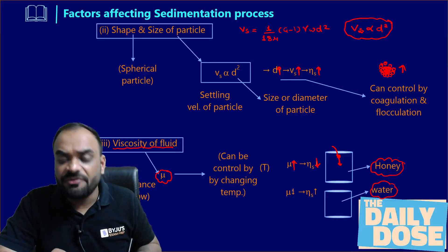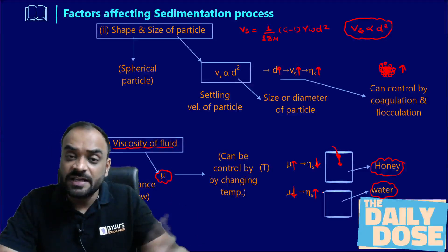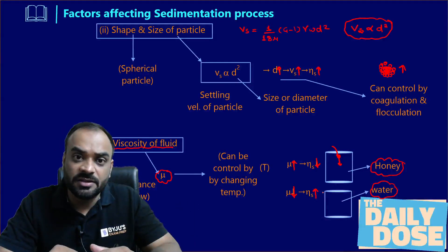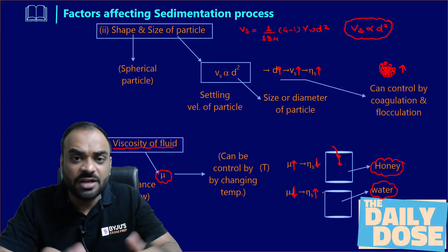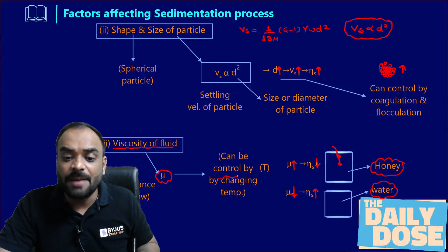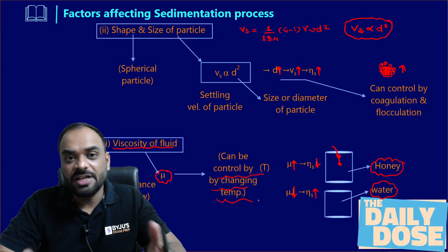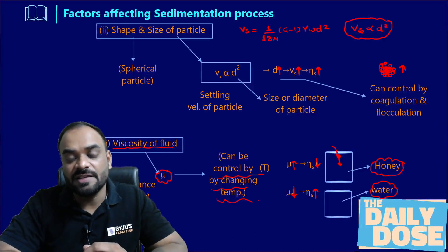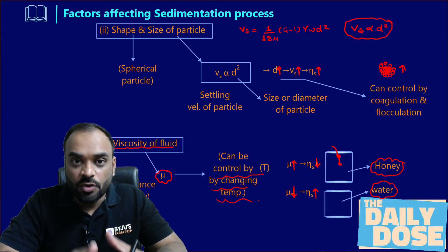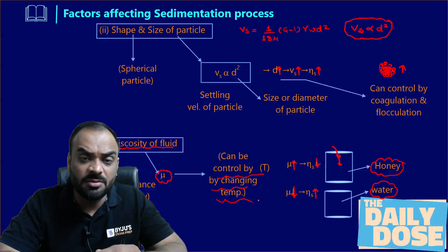In water, the dynamic viscosity is lesser, so the settling velocity will be higher compared to honey, and the sedimentation efficiency will also be high. Viscosity can also affect the sedimentation process. Now, can we control this factor? Yes — you can control dynamic viscosity by changing the temperature. However, the problem is that we are treating water in very large quantities to supply to the urban area, and it is not possible to change the temperature of such a large quantity. So we will not try to control temperature in our treatment plant. Therefore, only two of the three factors are practically controllable.